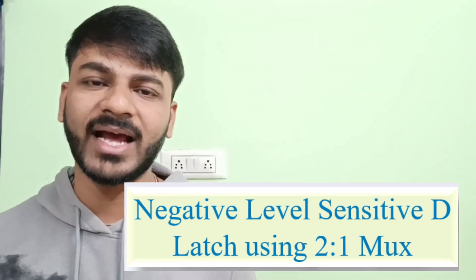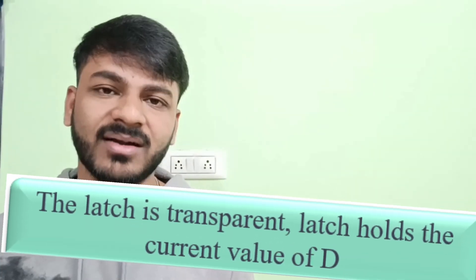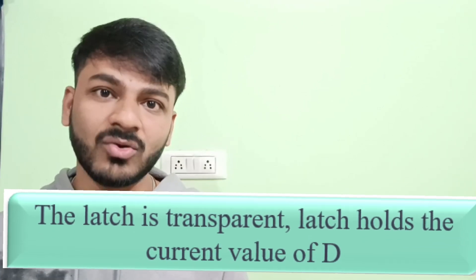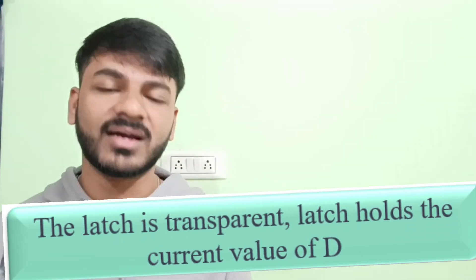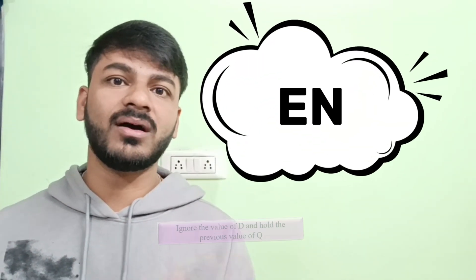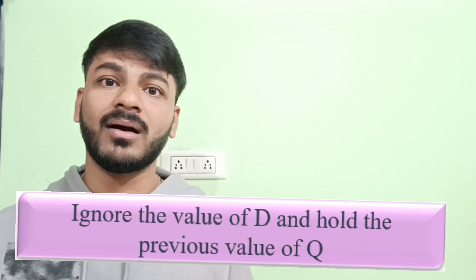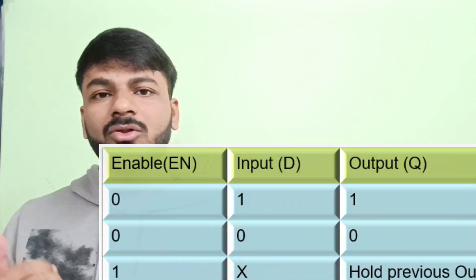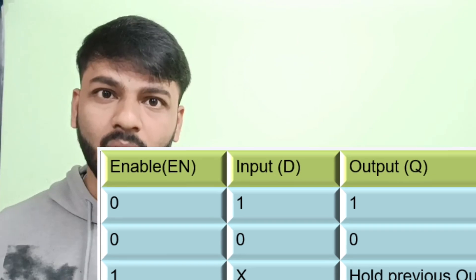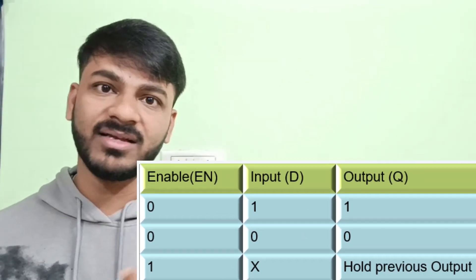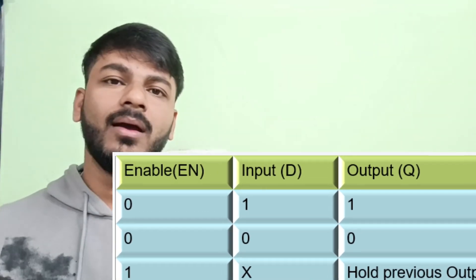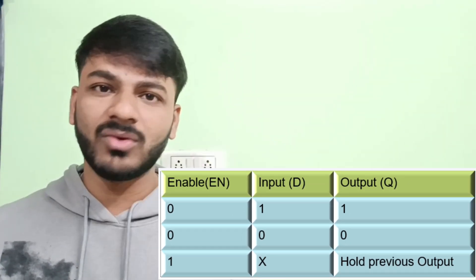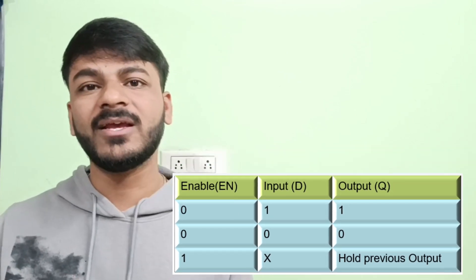Now if I talk about the working functionality of a negative level sensitive D latch — it is the reverse of positive level sensitivity. When Enable is low, the latch will act as transparent, meaning output Q will store the current value of D. But when Enable is high, it will ignore the input D and hold the previous value of Q. The truth table confirms that when Enable is low, whatever the value of D — either zero or one — Q will store that value. When Enable is high, the input D is ignored and Q holds its previous value.